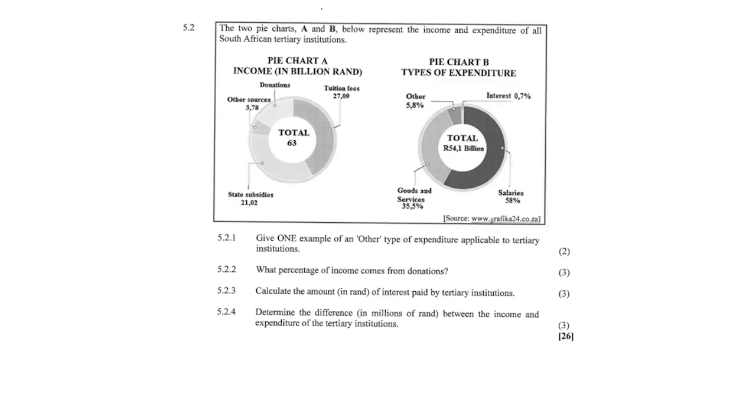5.2. The two pie charts, A and B, are given. So we've got pie chart A and pie chart B. Pie chart A is all the income. Pie chart B, all the expenses of South African tertiary institutions. So the unis and the colleges and all that good stuff.